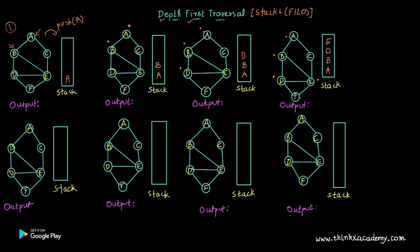Now E is at the top. We pick the next adjacent node. C and F are both adjacent to E, but F is closer, so we visit F next. We mark A, D, E as visited, and now F is visited. Whenever we visit a node we push it into the stack. So our stack now looks like: A, B, D, E, and F.